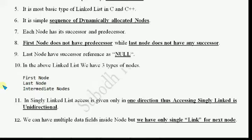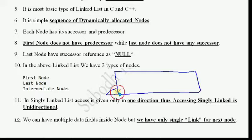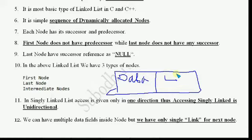What this means is: whenever we draw a node or understand a node, we consider it has two parts — one data part and one link part, that is the address part, in which we store the address of the next node.